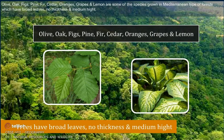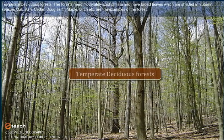Olive, oak, figs, pine, fir, cedar, oranges, grapes and lemon are some of the species grown in Mediterranean type of forests, which have broad leaves, no thickness and medium height.